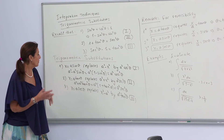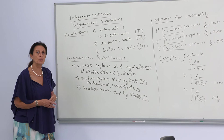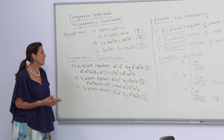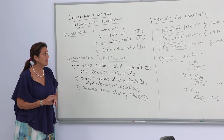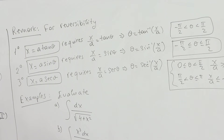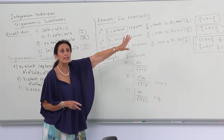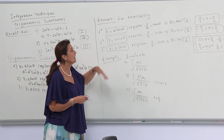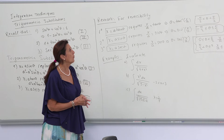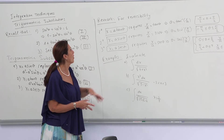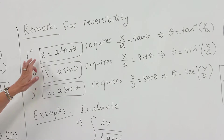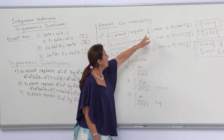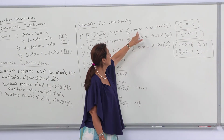When we make a substitution, we should re-substitute to obtain the real answer. That's why we should remember that for reversibility, we have the restrictions for the inverse trigonometric functions. When we obtain the results, we have to check if they are right. For the first substitution, x = a tanθ requires a specific restriction on theta.